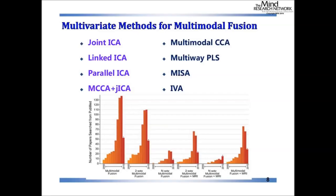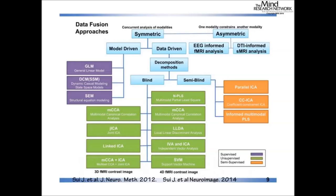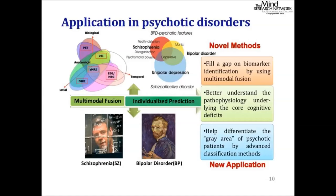There is an increasing trend in multi-modal studies — whether two-way, N-way, or multi-modal plus MRI — across recent years. Since we also use multivariate approaches, there are several methods: ICA-based methods, CCA and PLS, IVA, and the recently developed MISA method by our group. These can be summarized as symmetric and unsymmetric, and we have a review paper available if you want to learn more.